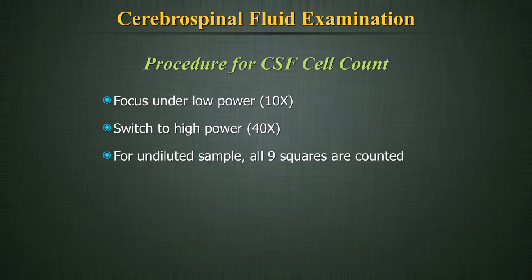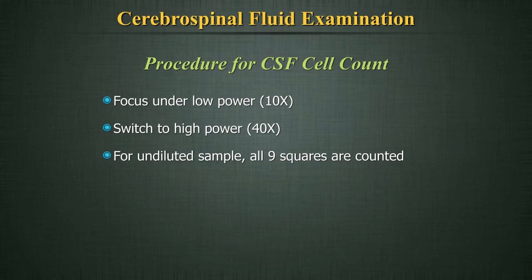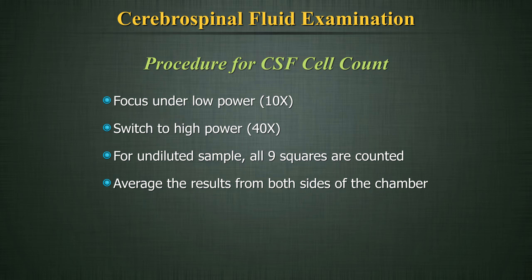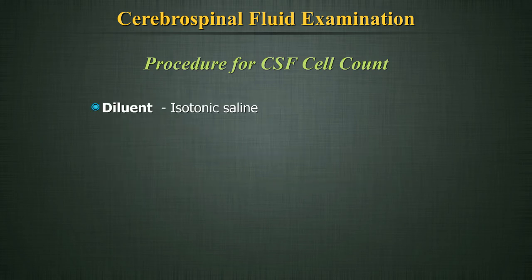For an undiluted sample, usually all 9 squares are counted. Average the results from both sides of the chamber. The necessity to dilute the CSF and the number of squares counted depends upon the cellularity of the specimen; adjustments should be made accordingly. Both WBCs and RBCs should be counted. If a diluent is required, isotonic saline may be used since it preserves both WBCs and RBCs. A 1-to-1 dilution is usually adequate to obtain a cell count.